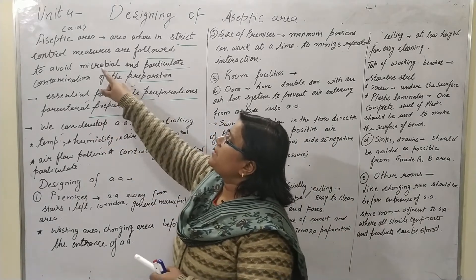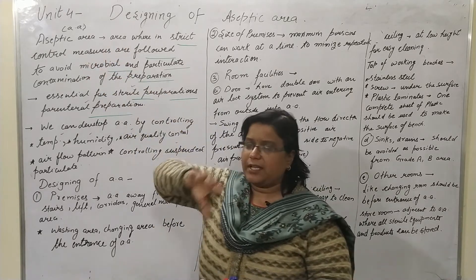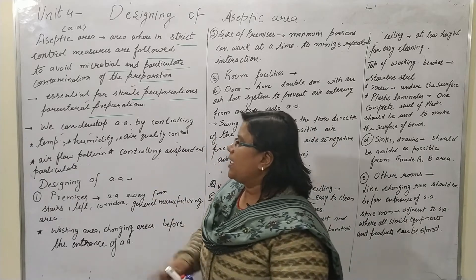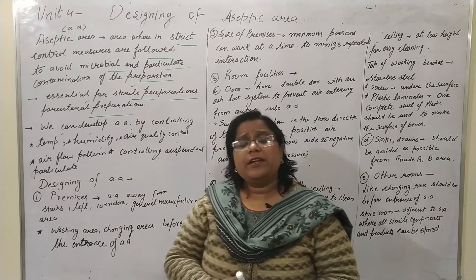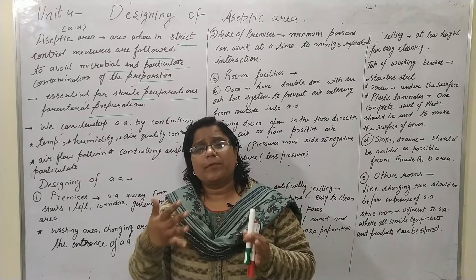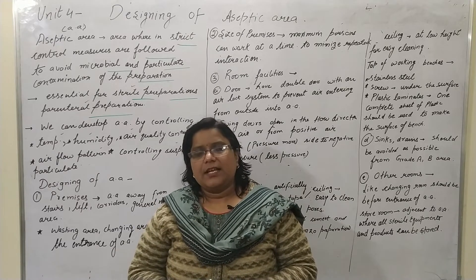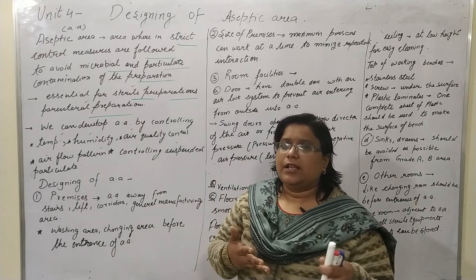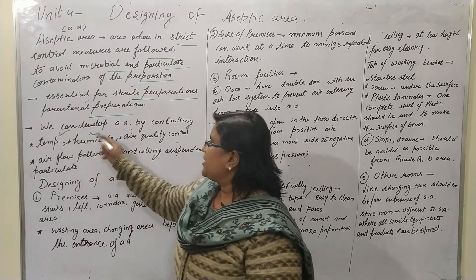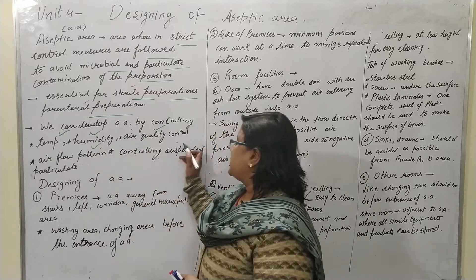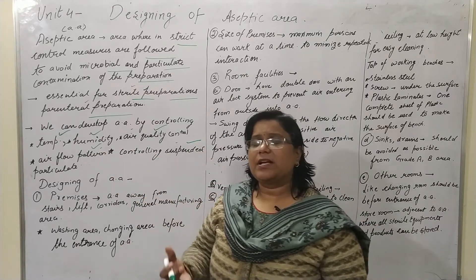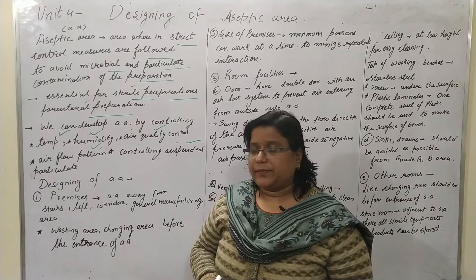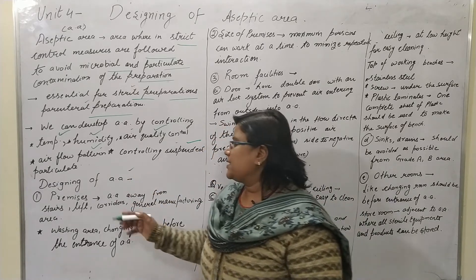I will use the symbol 'A.A.' for aseptic area going forward, as writing it repeatedly is quite tedious. Now, how can we maintain aseptic conditions in a particular premises? There are certain aspects: temperature, humidity, air pressure control, suspended particulate material, and air quality control — controlling flow patterns and suspended particulates. By controlling such things we can control contamination on the premises.